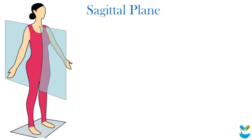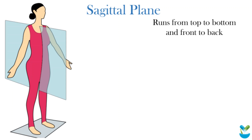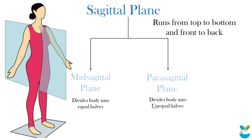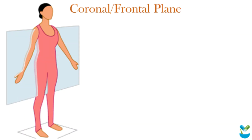First, the sagittal plane. This plane divides the body into right and left sections. It runs from top to bottom and front to back. This plane is either midsagittal, which divides the body into equal right and left sections, or parasagittal plane, which divides the body into unequal right and left sections.